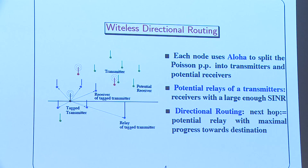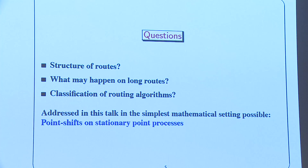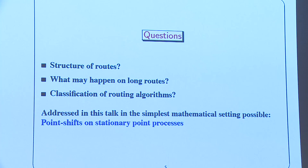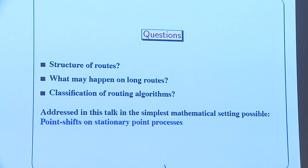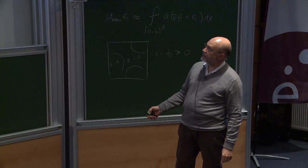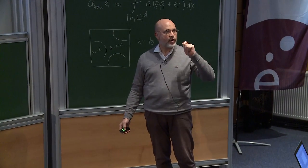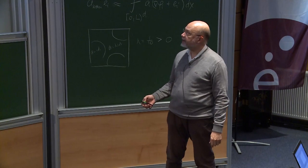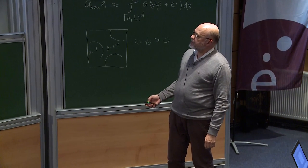The key questions are: the structure of routes, what happens on long routes, and the classification of routing algorithms. We'll address them in the simplest mathematical setting — that of point shifts on stationary point processes. A point shift is a dynamical system on a counting measure, with no extra information. We just look at the point configuration to decide, from one point, which next point to go to.